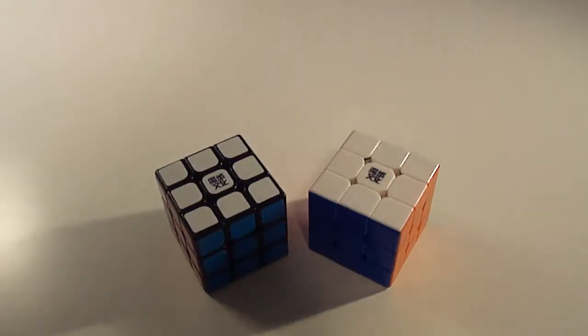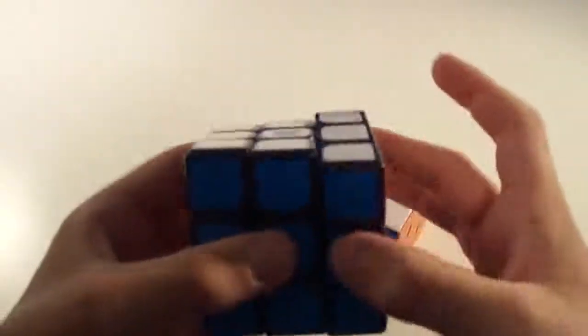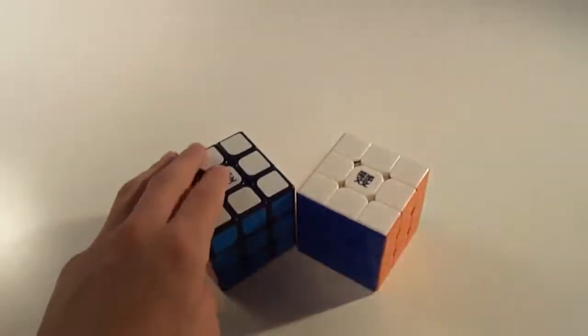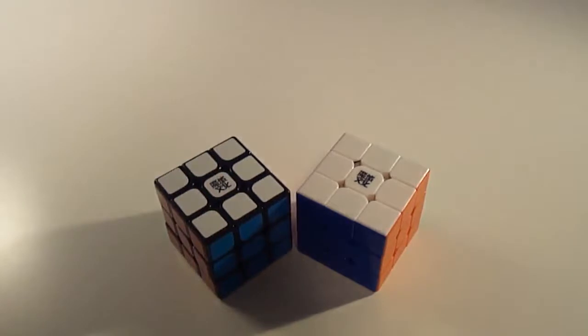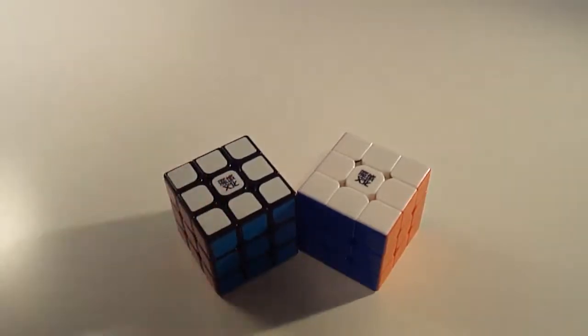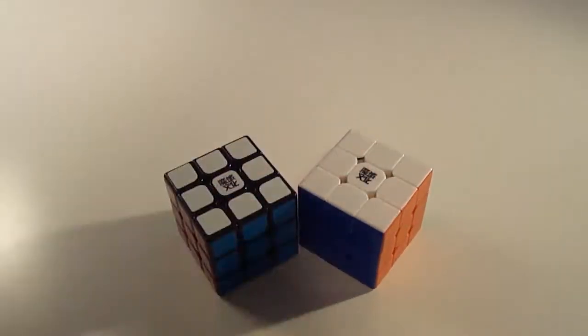I know I pretty much said this in my last video, but this is the Moyu Hualong, and the only differences between these cubes, I would say, are the tensions, because I tensioned this differently, the time that it's been broken in, because I've had this one longer, and the fact that this is stickered and this is not. That's basically all I can find that is different with these two cubes. They are basically the same.